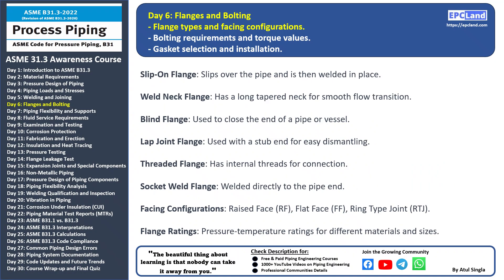Hello and welcome back to our 30-day beginner course on ASME B31.3. Today we're diving into a crucial aspect of piping systems: flange types and facing configurations. Flanges play a vital role in connecting piping components and facilitating easy assembly and disassembly. Slip-on flange: this flange slips over the pipe and is then welded in place. It's suitable for low pressure applications.